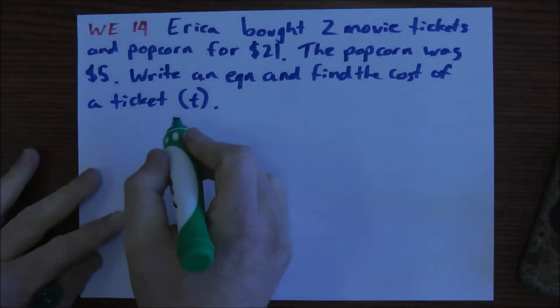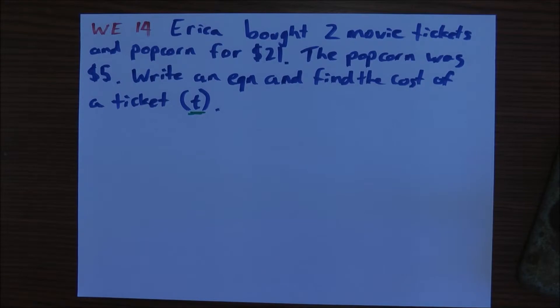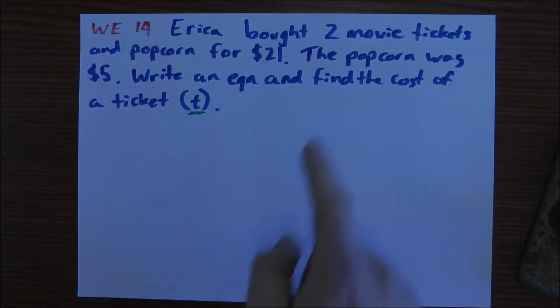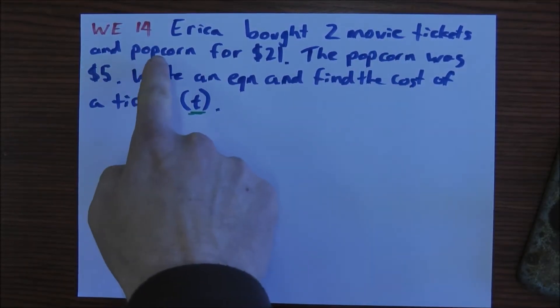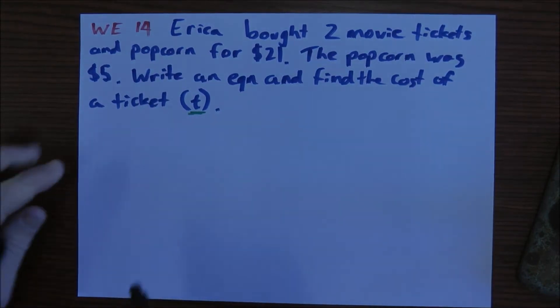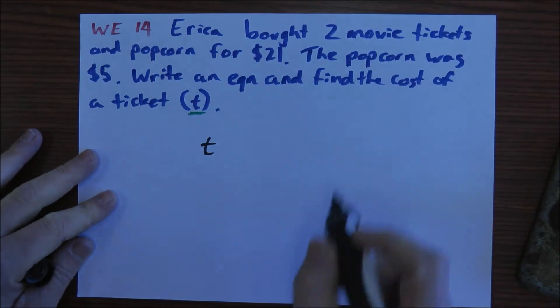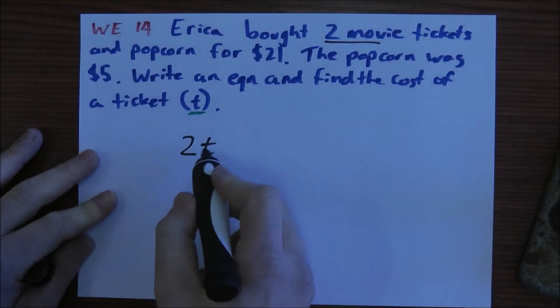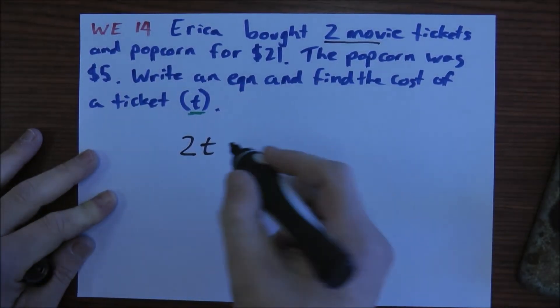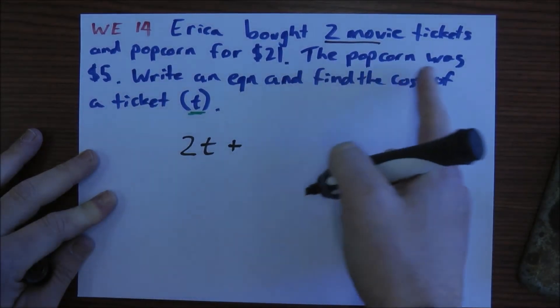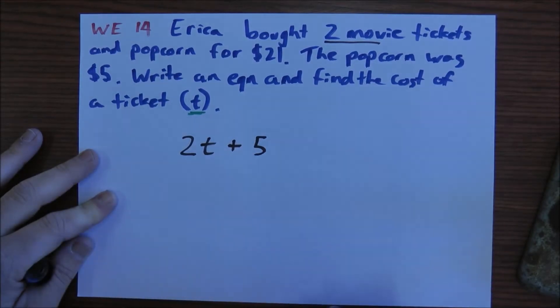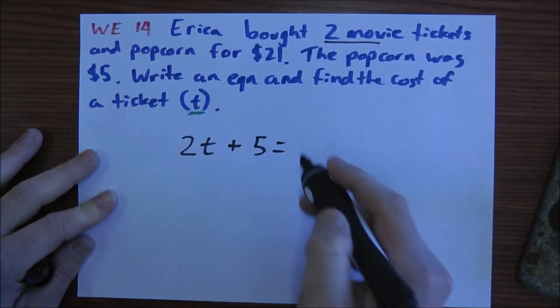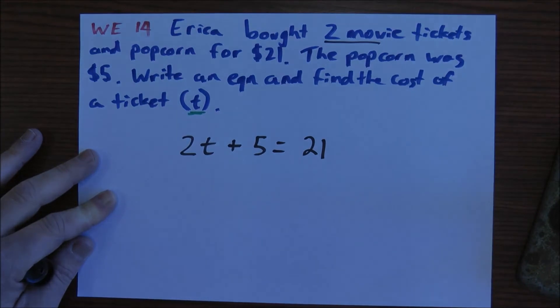So I've got my variable which is T. T is my cost of the ticket. Now I know that I'm starting with $21 because that's how much I've bought it all for. I know that I'm buying two movie tickets and popcorn. Now T is the cost of my movie ticket. So I'll start with that. We bought two movie tickets, so we write that mathematically as 2T, which means two times T. And we bought the popcorn, so we've got to add on the cost of our popcorn. And it says the popcorn was $5. Everything's in dollars so far. And that cost me a total of $21.